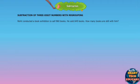Subtraction of 3 digit numbers with regrouping. Rohit conducted a book exhibition to sell 960 books. He sold 645 books. How many books are still with him?